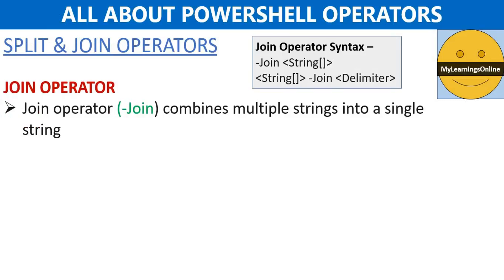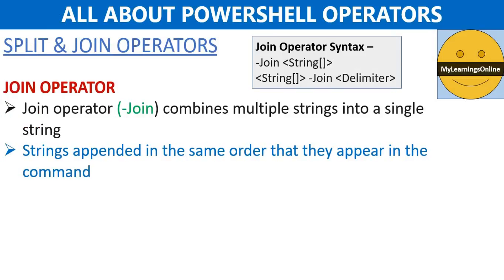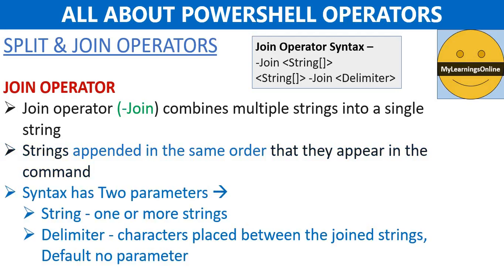Next one is the join operator. The join operator combines a set of strings into a single string. The strings are appended to the resulting string in the same order they appear in the command. The syntax has two parameters: string and delimiter. String specifies one or more strings that need to be joined. Delimiter specifies one or more characters placed between the joined strings. The default is no delimiter.